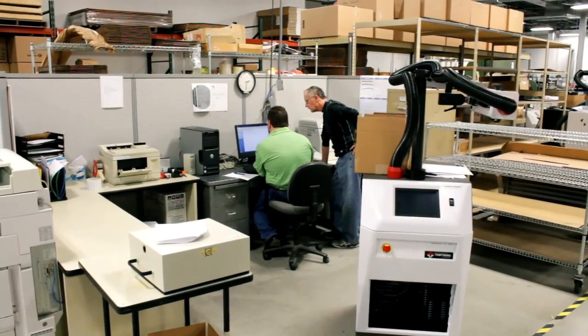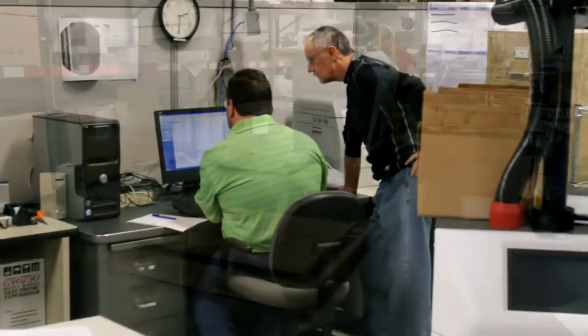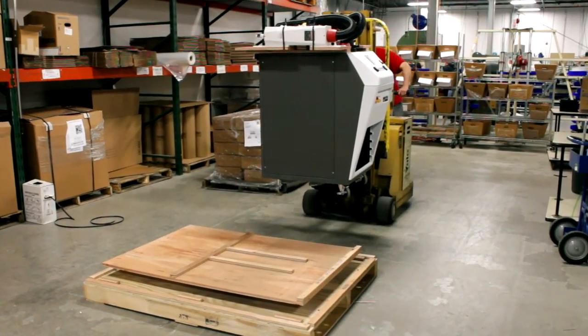Here in final inspection, the sales order is reviewed against the system and all test results are confirmed. Lastly, the system is visually inspected to ensure that it is in pristine condition before shipping.